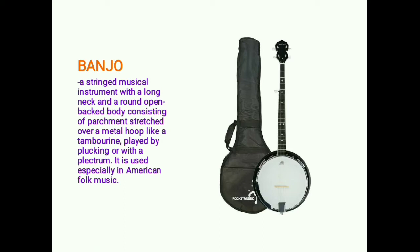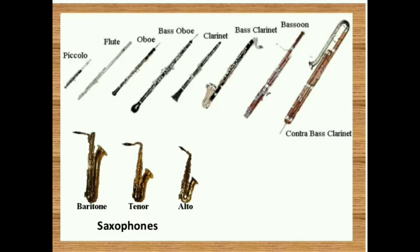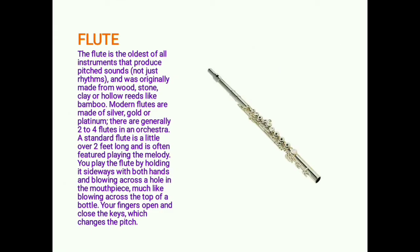The banjo is a string musical instrument with a long neck and a round open-backed body consisting of parchment stretched over a metal hoop, like a tambourine. It is played by plucking or with a plectrum and is used especially in American folk music. Next, we have wind instruments — any musical instrument that uses air as the primary vibrating medium for the production of sound.